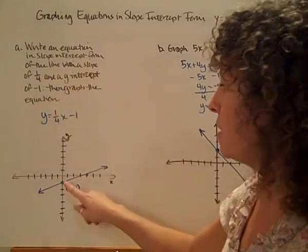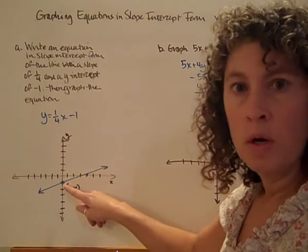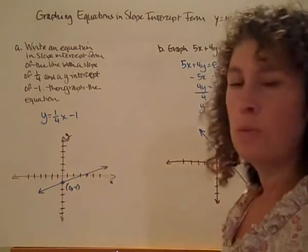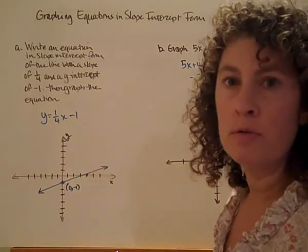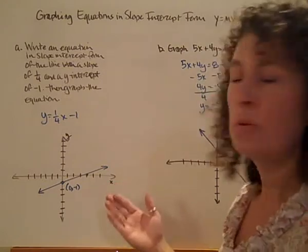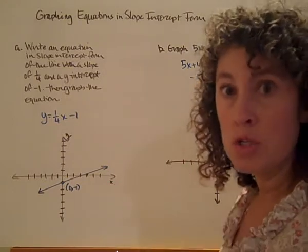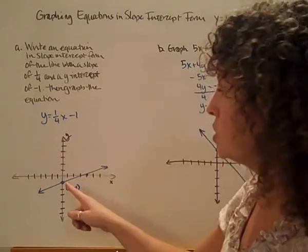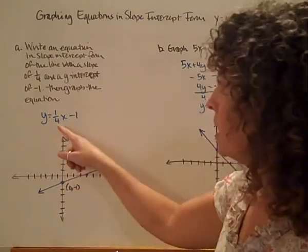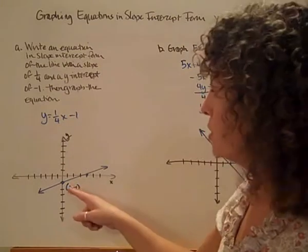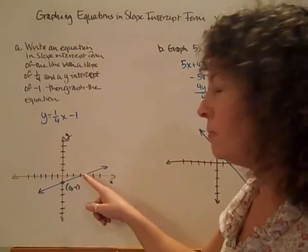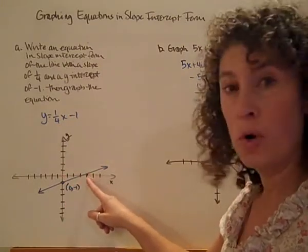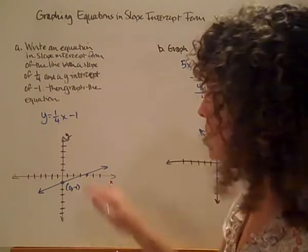Let's graph this. I have a y-intercept of negative 1. So here's my negative 1 on my y-intercept. When we're graphing an equation, I need to know where to start before I can do my rise and run. So I'm going to start at my y-intercept. Now I have a slope of 1/4. So I'm going to do a rise of 1 and run of 4. I end up with another point on my line. I can graph the line that connects those two points.